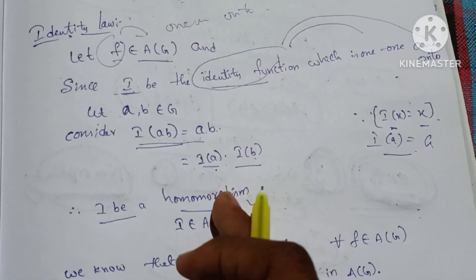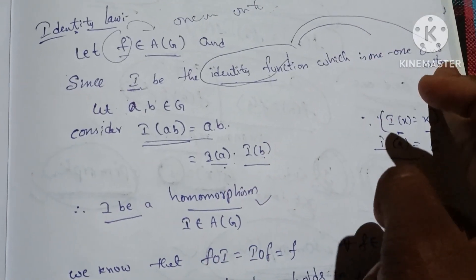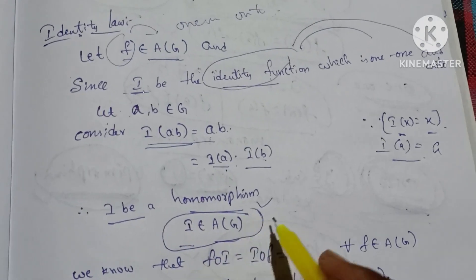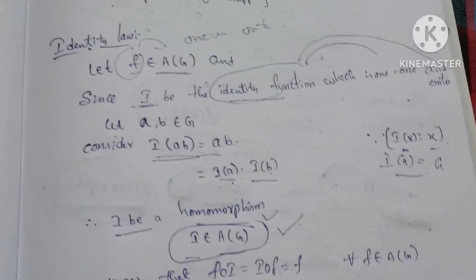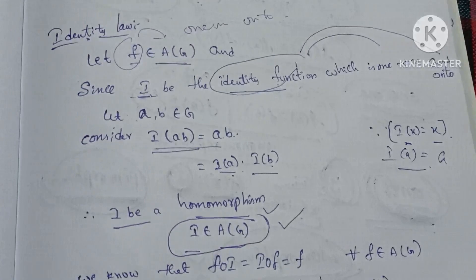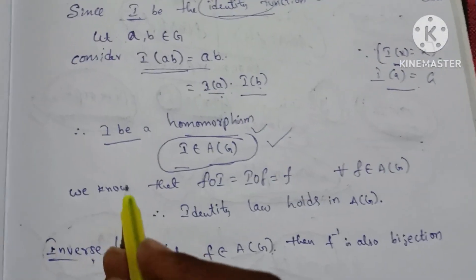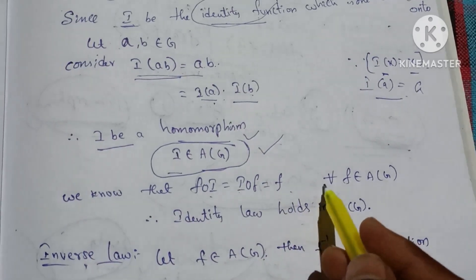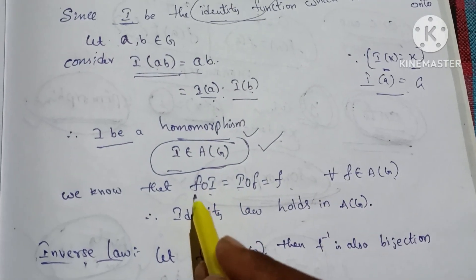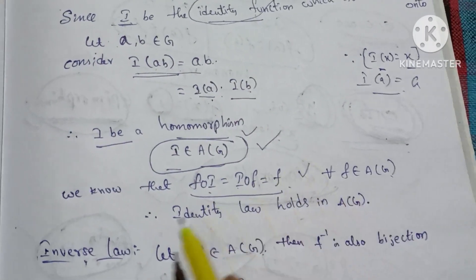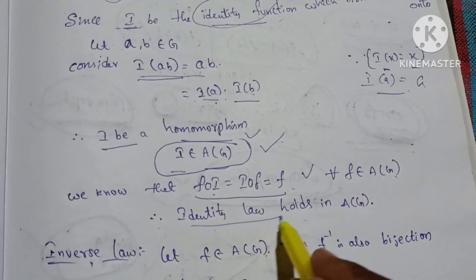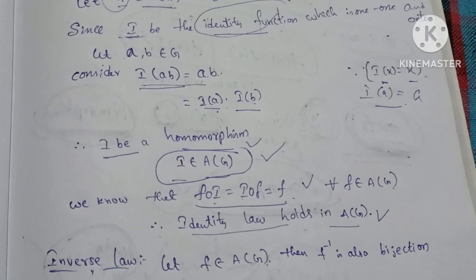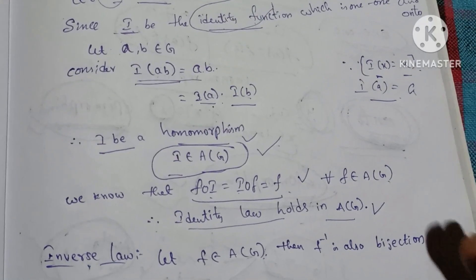Since I is an automorphism, I belongs to A(G). We know that F circle I equals I circle F equals F for all F belonging to A(G). This is the direct identity law condition. Therefore, the identity law holds in A(G). The four laws are: closure law, associative law, identity law, and the last is inverse law.